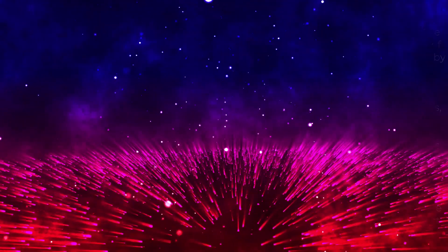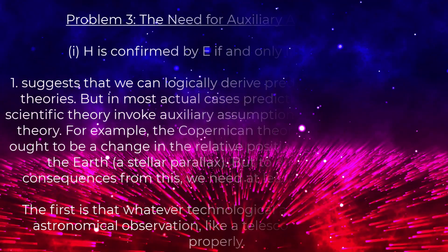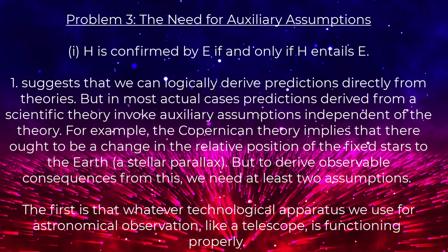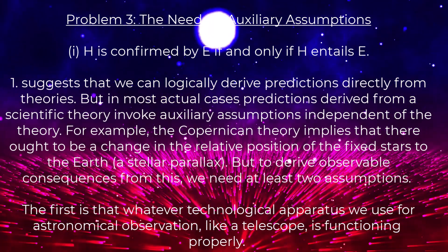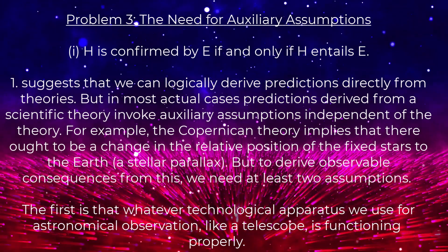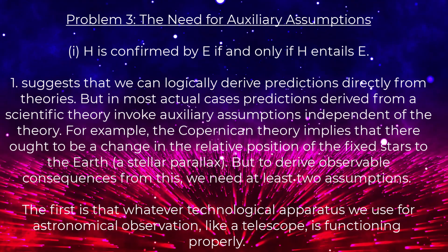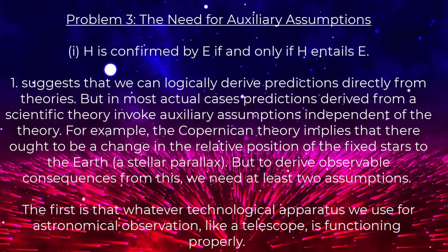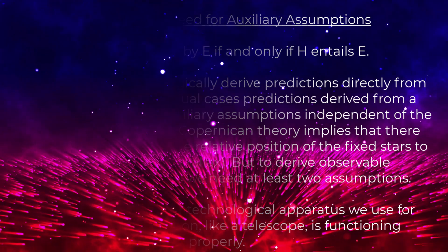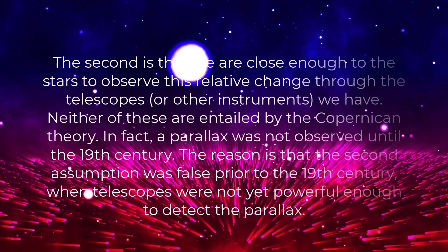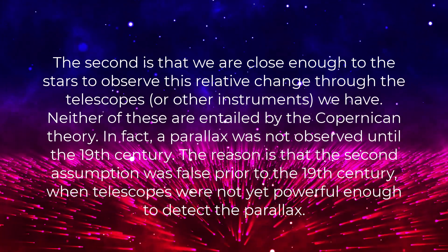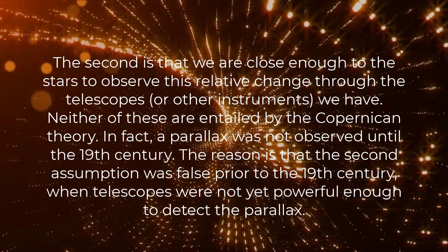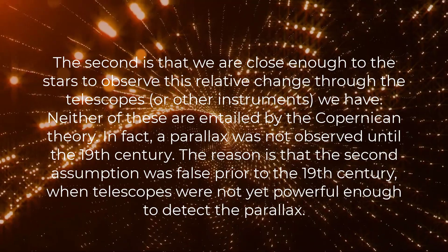One problem with this solution is that sometimes we'll have theories that make all the same predictions, or that are such that we don't presently have the technology to test differing predictions. Problem three: the need for auxiliary assumptions. In most actual cases, predictions derived from a scientific theory invoke auxiliary assumptions independent of the theory. For example, the Copernican theory implies there ought to be a change in the relative position of the fixed stars to the earth — a stellar parallax — but to derive observable consequences from this we need at least two assumptions: first, that our telescope is functioning properly; second, that we are close enough to the stars to observe this relative change.